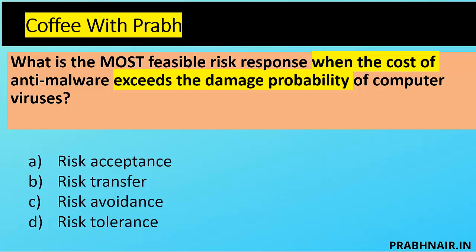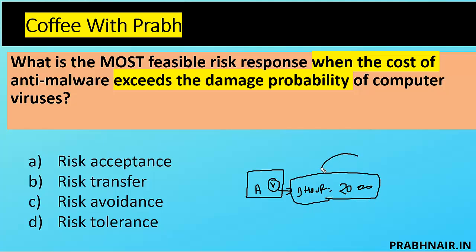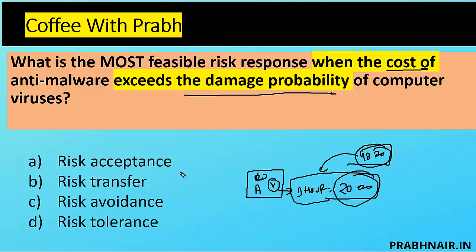Next coffee shot: what is the most feasible risk response when the cost of anti-malware exceeds the damage probability? For example, a virus in the system costs $2,000 in damage for one hour, but implementing the anti-malware solution costs $4,000. There's no point investing $4,000 for a $2,000 problem. Option A is risk acceptance.